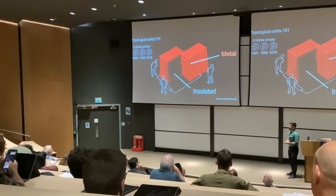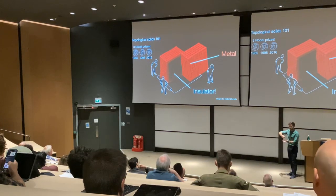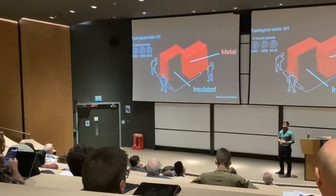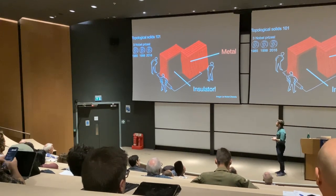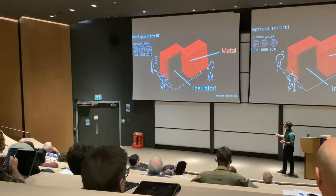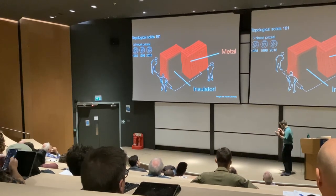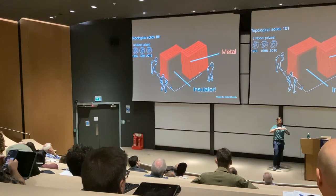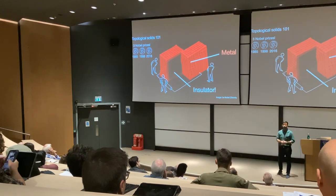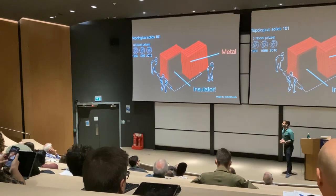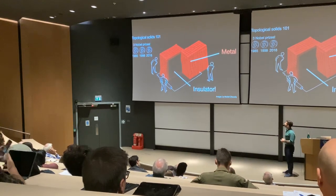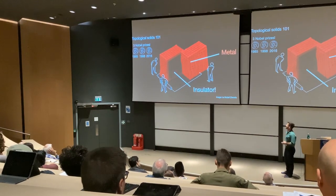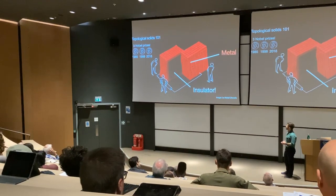You might say you could scratch out the metal at the top, but in fact you cannot, and the reason is quite robust. It's hidden in the word 'topological.' Topology, in this context, means there's some global property of the electrons' wave functions — the way electrons behave collectively — that guarantees a metallic surface state.